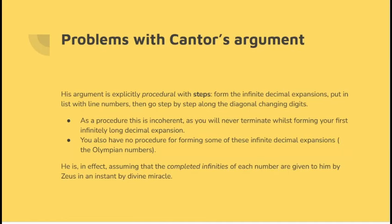Well, his argument is explicitly procedural. With steps. Form the infinite decimal expansions. Put them in a list with numbers. Then go step by step along the diagonal. Now, as a procedure, this is incoherent. You're obviously never going to terminate while forming your first infinitely long decimal expansion. So the algorithm's got a bug in it.